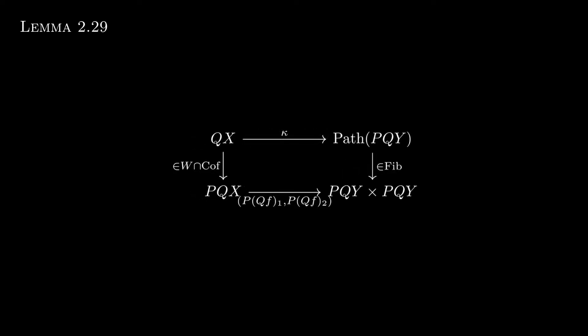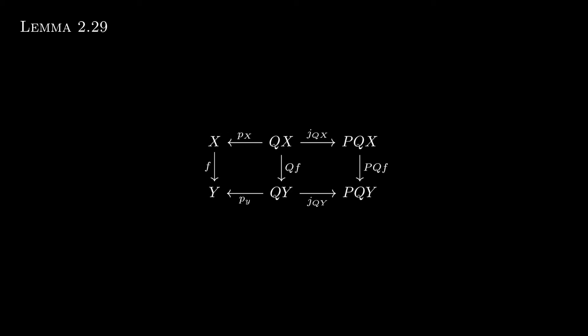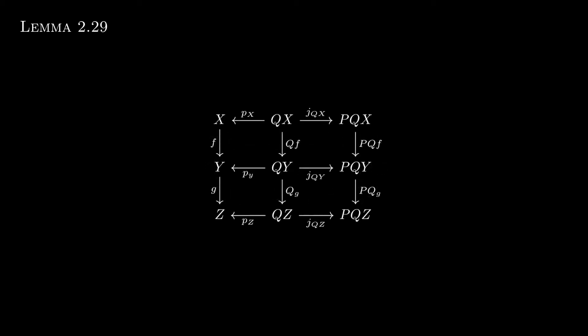Applying P, we get PQX and PQY. Suppose we have two lifts from PQX to PQY; there is a diagram which admits a lift, so these two maps are homotopic and PQf is well-defined — that is, the functor is well-defined on morphisms. As for composition, by looking at the diagram, one can rearrange it to see that PQg followed by PQf is a lift in the same sense, and by the same argument it is homotopic to PQ of g∘f.